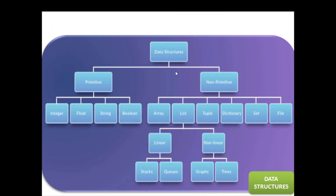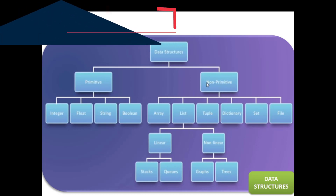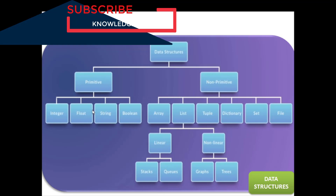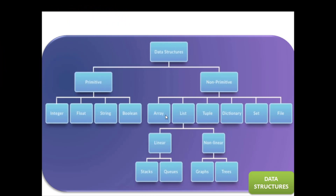Generally, data structures can be divided into two categories in computer science: primitive, for example integer, float, string, boolean, and non-primitive data structures. The former are the simplest forms of representing data, whereas the latter are more advanced, for example array, list, tuple, dictionary, set, file. They contain the primitive data structures with more complex data for special purposes.